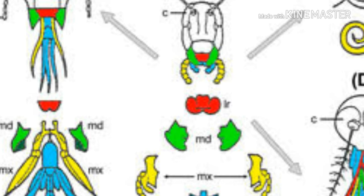Chewing and lapping type of mouthparts are found in Honey Bee. Sponging type of mouthparts are found in House Fly. Siphoning type of mouthparts are found in Butterflies and Moths.